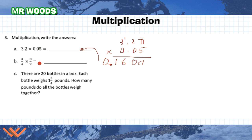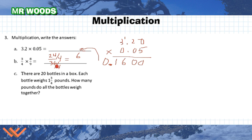When multiplying fractions, I just multiply the tops and the bottoms. So 3 times 8 is 24, and 4 times 9 is 36, giving me 24/36. I can simplify by dividing each side by 4, getting 6/9, then divide by 3, giving me 2 thirds. I could also have recognized that 24 and 36 are both divisible by 12 to get there in one step.